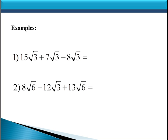Let's look at some examples. In this first one, we have 15 square roots of 3, plus 7 square roots of 3, minus 8 square roots of 3. Notice that with all three of these terms, the radical portion is exactly the same — they're all square roots of 3 terms. So we can perform this addition and subtraction by working with the coefficients 15, 7, and 8, and our answer will be in square roots of 3. So 15 plus 7 is 22, take away 8, giving us 14 square roots of 3.